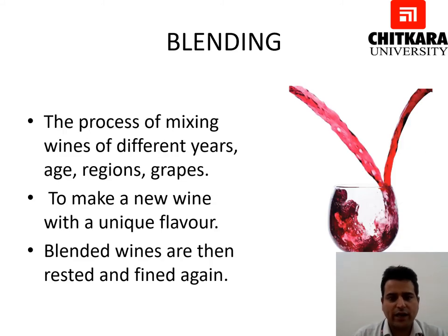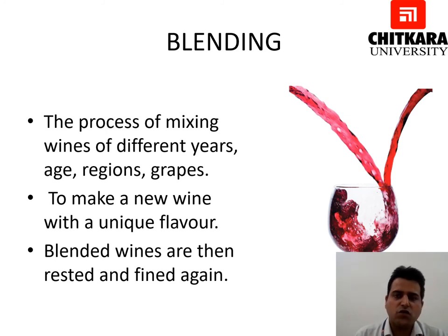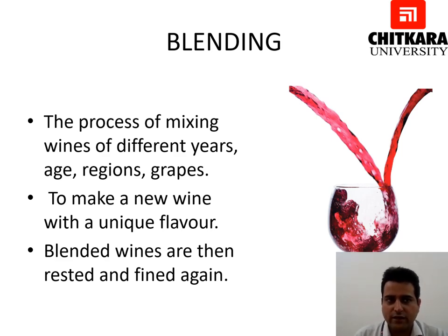The second last step is blending — the process of mixing wines of different years, age, region, and grades to make a new wine with a different flavor. A winemaker may also blend wines from a variety of regions so as to adjust acidity, alcohol levels, tannin content, or to improve the color, aroma, or flavor. Blended wines are then rested and fined again to ensure no impurities are present.